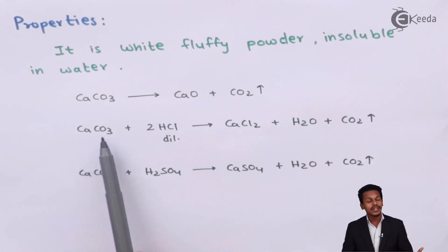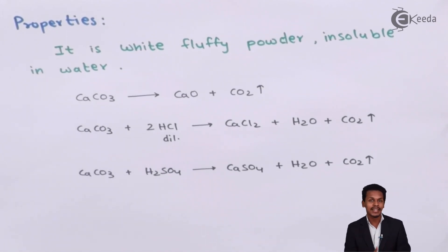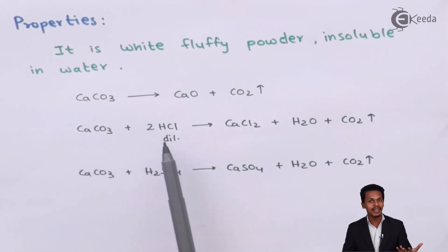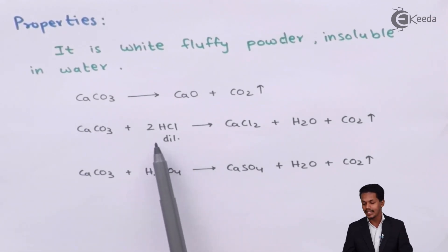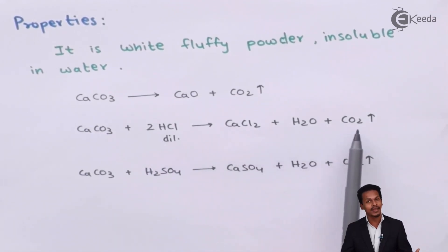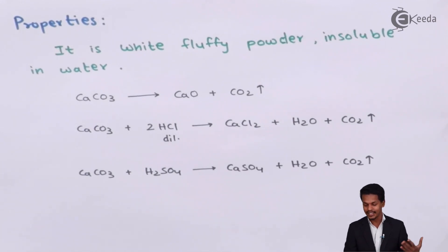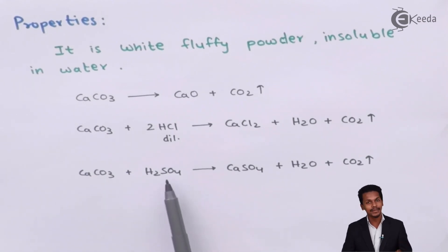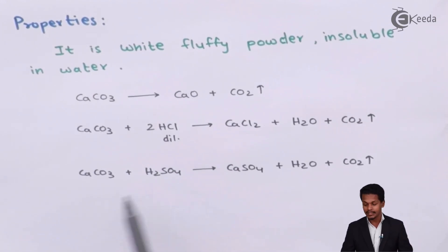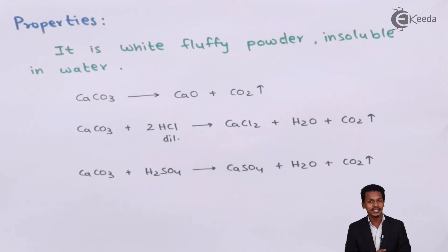Calcium carbonate can also react with dilute mineral acids such as HCl and H2SO4. When calcium carbonate reacts with dilute HCl, we get CaCl2 (calcium chloride) along with water and carbon dioxide — this is another way to prepare calcium chloride. When calcium carbonate reacts with dilute sulfuric acid, we obtain calcium sulfate along with water and carbon dioxide.